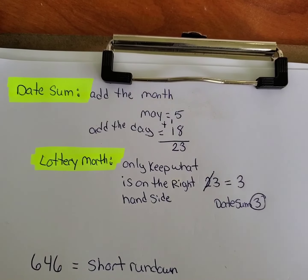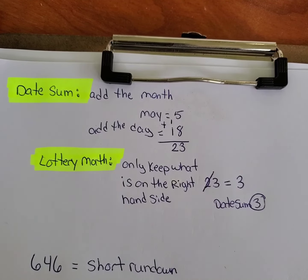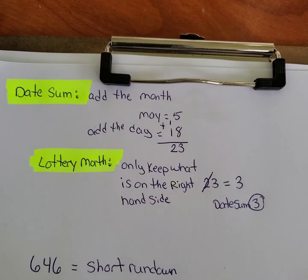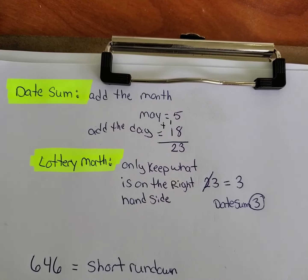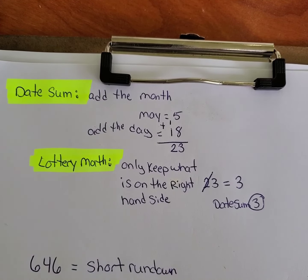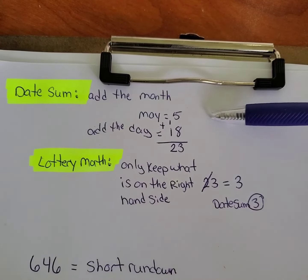Now we have the date sum. A lot of people ask how do you get the date sum and why is it important. The date sum is important because everything with these numbers is correlated around your date. There are methods that break down specifically to being the 5th month, the 18th day — taking pairs of 5-1, 5-8, putting them together, or taking a pair like 5-3, 5-6, putting them together — and that's how you get your numbers. There's a whole system set up strictly just on the date, which I'd like to introduce to you guys. Even though I don't post it daily, I do use it from time to time.